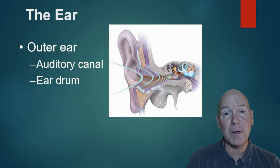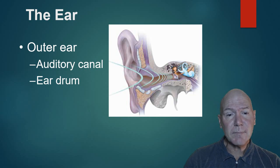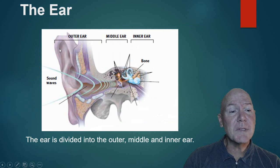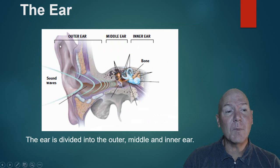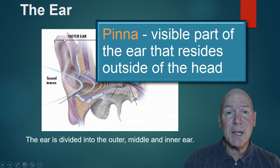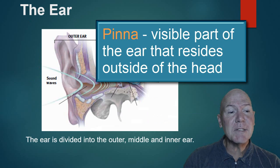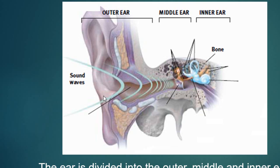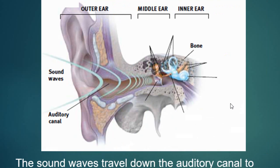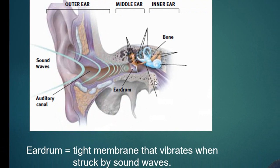Let's have a look at our ear. It's basically comprised of three parts: the outer ear, the middle ear, and the inner ear. The outer ear contains the auditory canal and the eardrum. The big floppy part we call our ears is called the pinna, and what the pinna does is collect those sound waves and compress them through the auditory canal until they hit the eardrum. The eardrum marks the end of the outer ear.